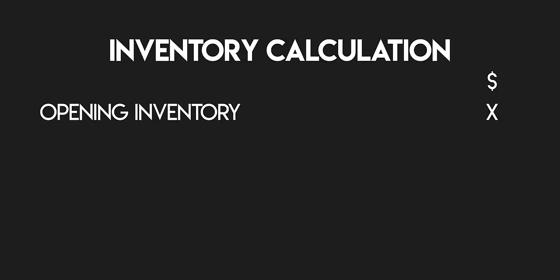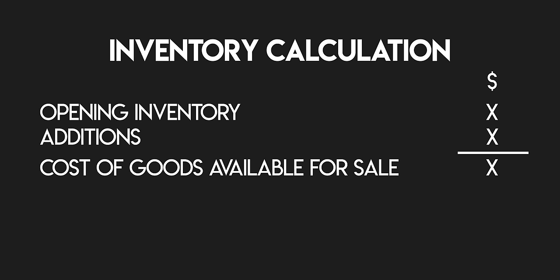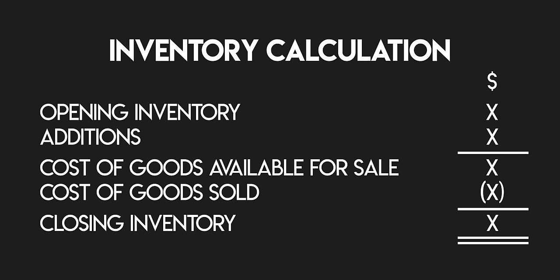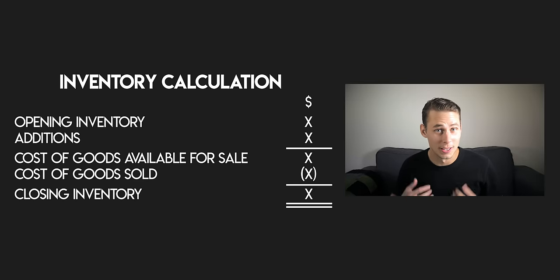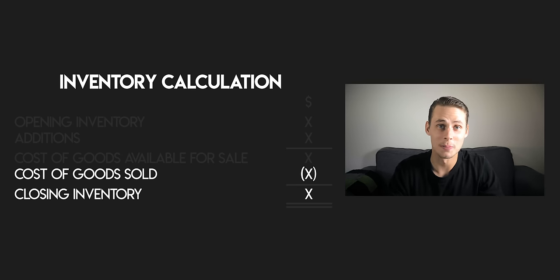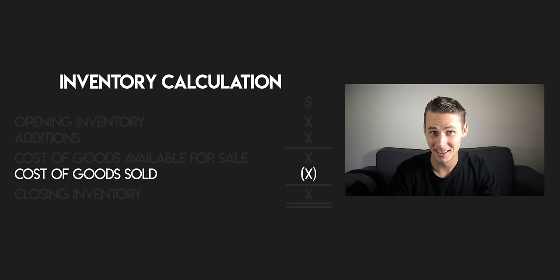We'll begin with a calculation. At the top, you have your opening inventory plus your additions for October. When you add these together, you work out your cost of goods available for sale. And below that, if you subtract your cost of goods sold, then you come to your closing inventory — the inventory on hand at the end of the period. This calculation is going to be our foundation for the rest of the example. We'll use it to work out your closing inventory and your cost of goods sold for October using both the perpetual and periodic methods. Pay close attention to timing: when is it that you first find out your cost of goods sold under each method? This is key to understanding the difference between the two systems.